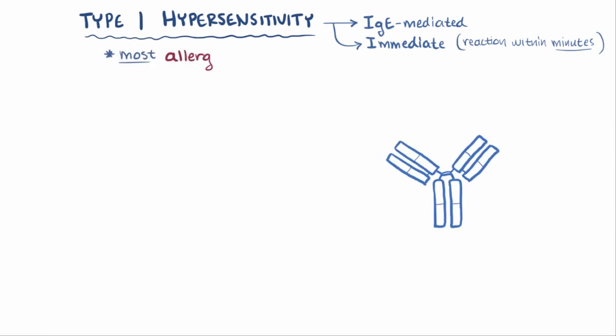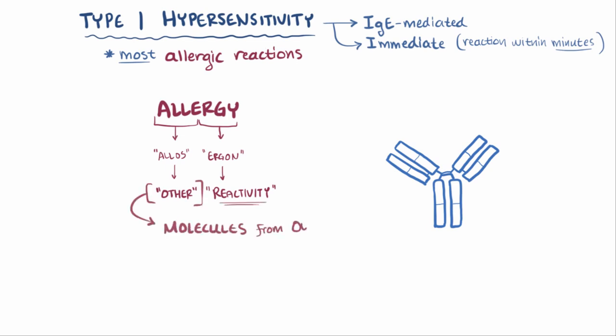Most allergic reactions are IgE-mediated, and therefore most allergies are type 1 hypersensitivity reactions. Allergy comes from the Greek allos, which roughly means other, and ergon, which means reactivity. Essentially, allergies are reactions to molecules from outside your own body, that most people don't react to.